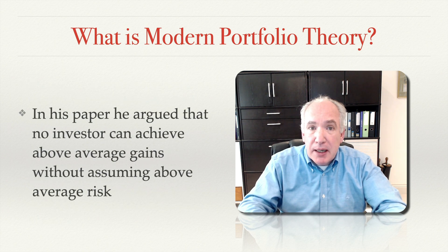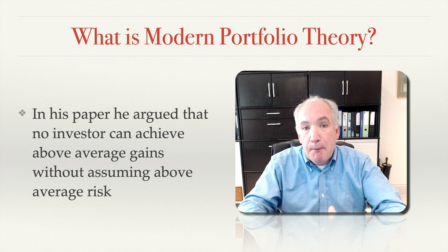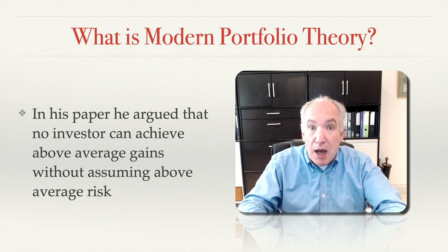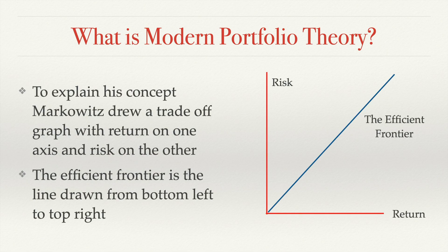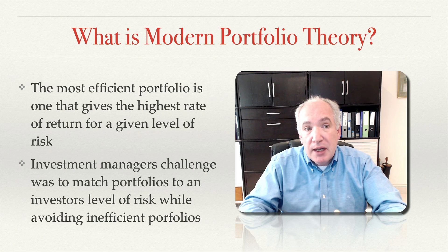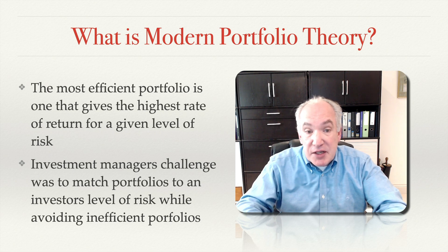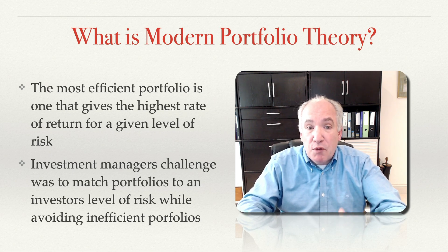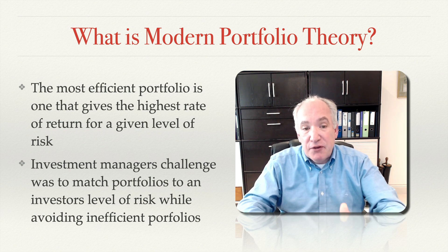In his paper he argued that no investor can achieve above average gains without assuming above average risk. To explain his concept, Markowitz drew a trade-off graph with return on one axis and risk on the other. The efficient frontier is the line drawn from bottom left to top right, which you can see here. The most efficient portfolio is one that gives the highest rate of return for a given level of risk. Investment managers' challenge was to match portfolios to an investor's level of risk while avoiding inefficient portfolios.